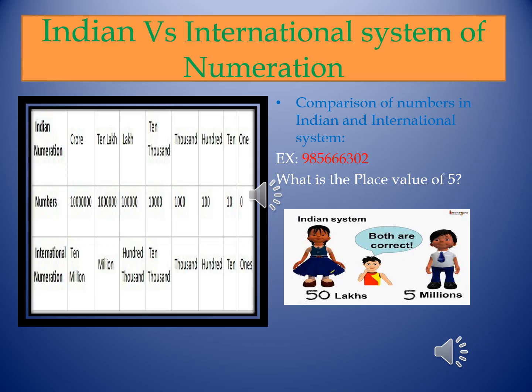Children, we have discussed about the Indian system and international system of numeration. Now we can compare the numbers in both systems by observing the place value chart. For example, the value of 1 crore: from Indian numeration to the international system, 1 crore is equal to 10 million. In this way, we can compare numbers from the Indian system to the international system and vice versa.